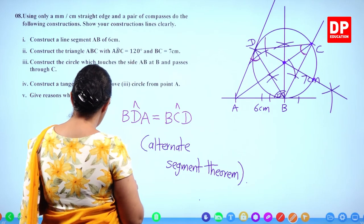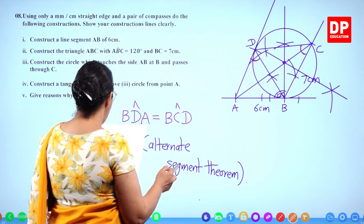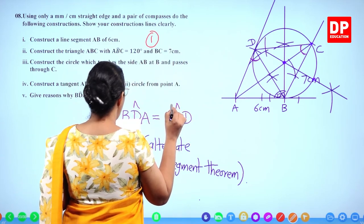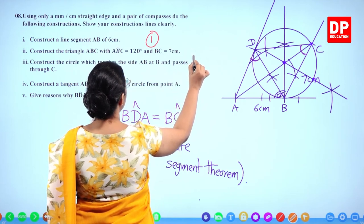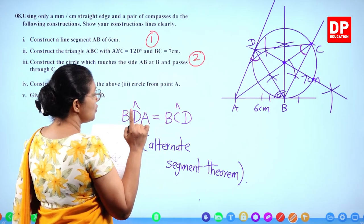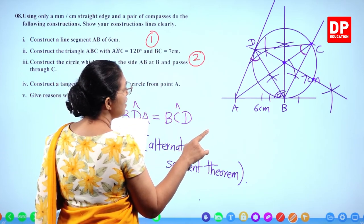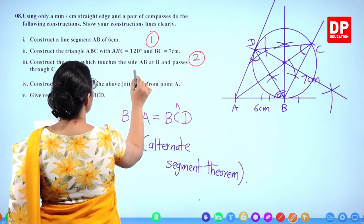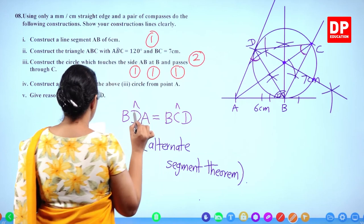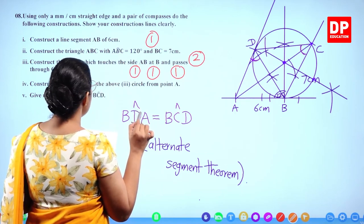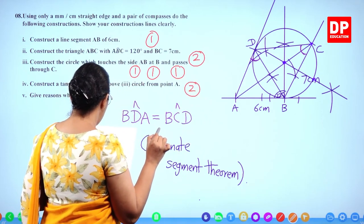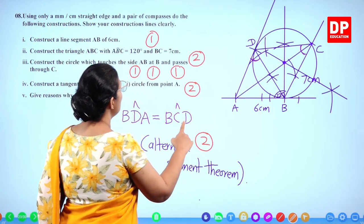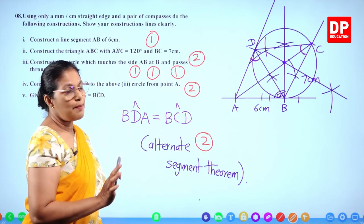Marking scheme: 1 mark for line segment, 2 marks for triangle, 1 mark for perpendicular bisector, 1 mark for perpendicular line at B, 1 mark for circle, 2 marks for tangent AD, 2 marks for alternate segment theorem reason — 10 marks total for question 8.